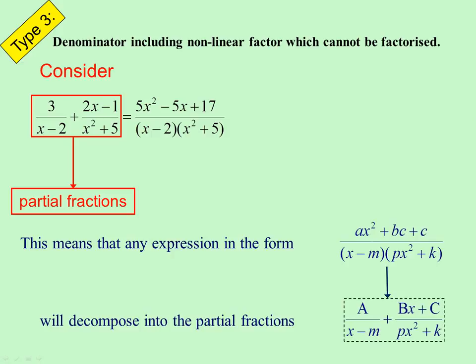So any expression ax squared plus bx plus c over that - you'll notice that's second degree, this is third degree (x times x squared is x cubed) - will end up with an x minus m and we'll end up with a px squared plus k. Note that this is second degree, and that will have a first degree, a linear denominator there.